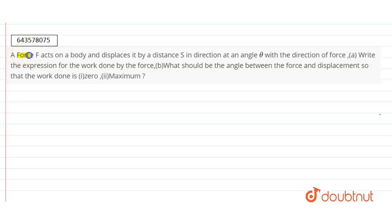Hello, so our question is: a force F acts on a body and displaces it by a distance S in direction at an angle theta with the direction of force. Write the expression for the work done by the force. Part B is what should be the angle between the force and displacement so that the work done is zero and maximum.